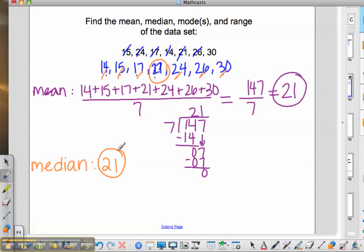If you have an even number of values in your data set, the median is the mean of the two middle numbers.